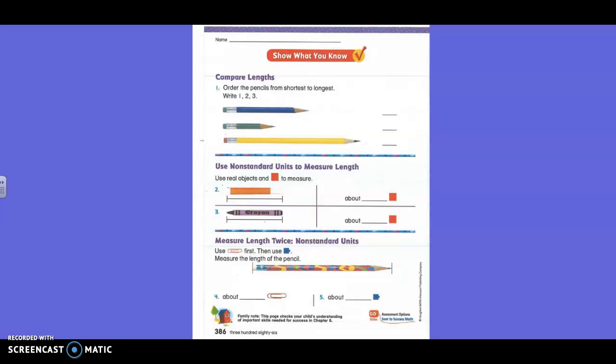On number one, you're comparing the lengths. What it means is you're putting them in order from shortest to longest by writing one for the shortest, two for the next shortest, and three for the longest. So you're doing that in order right there. So right now, order those pencils in order, one, two, three, whatever order the shortest to longest is. Shortest should be number one. Longest should be number three.